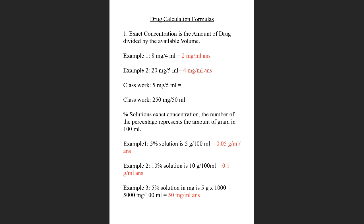Example one: you have a solution with eight milligrams in four mils. Using the exact concentration formula — amount of drug divided by available volume — it would be eight milligrams divided by four mils. Eight divided by four gives you two milligrams per mil. So the exact concentration is two milligrams per mil.